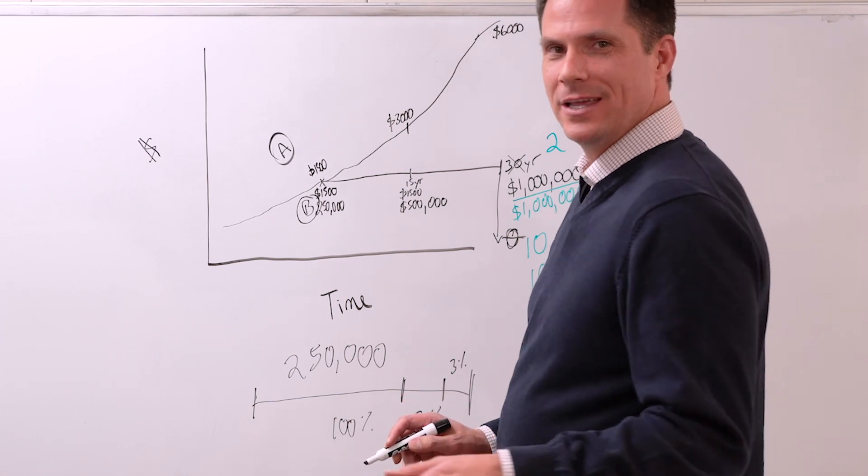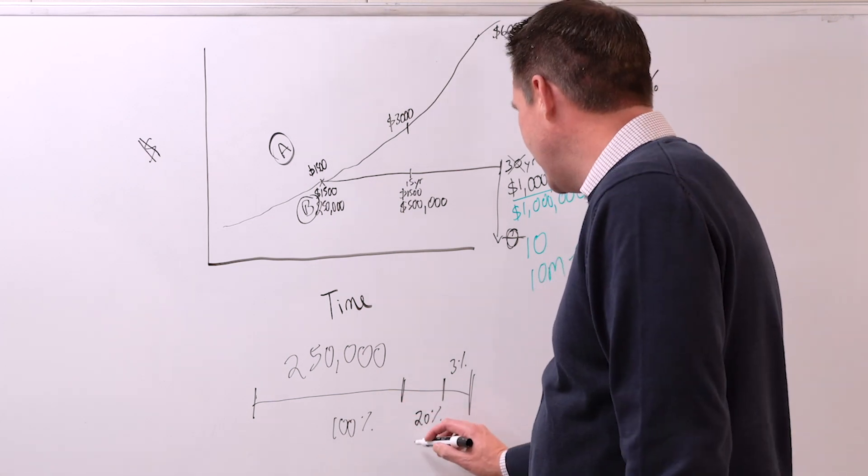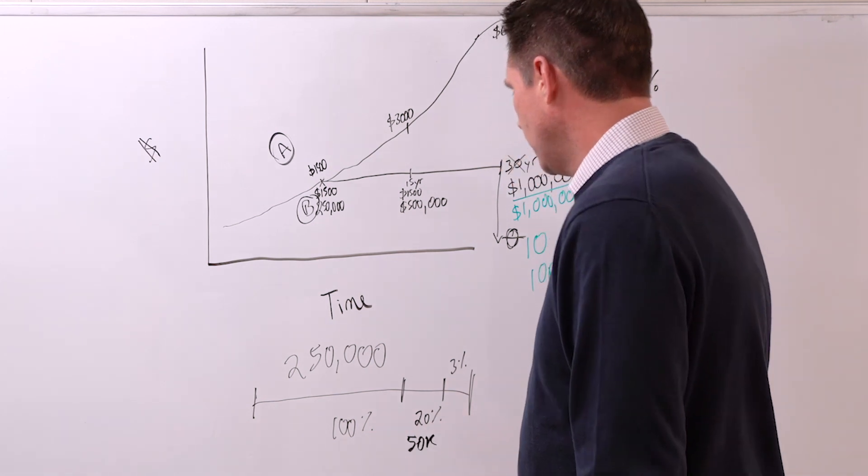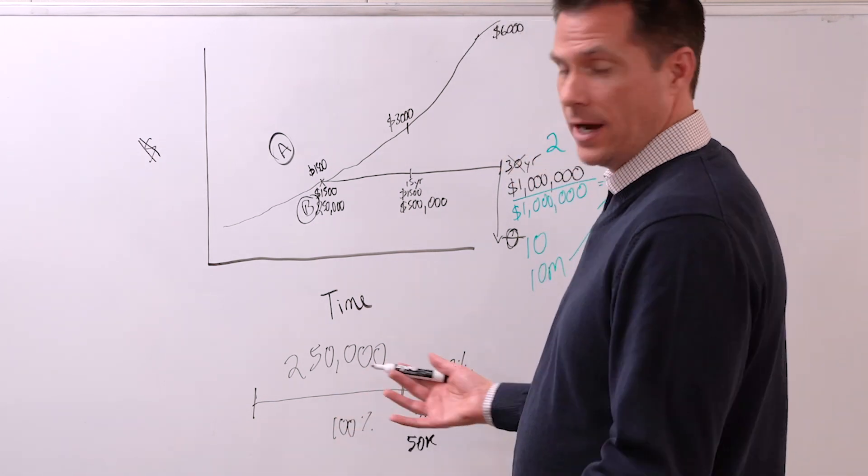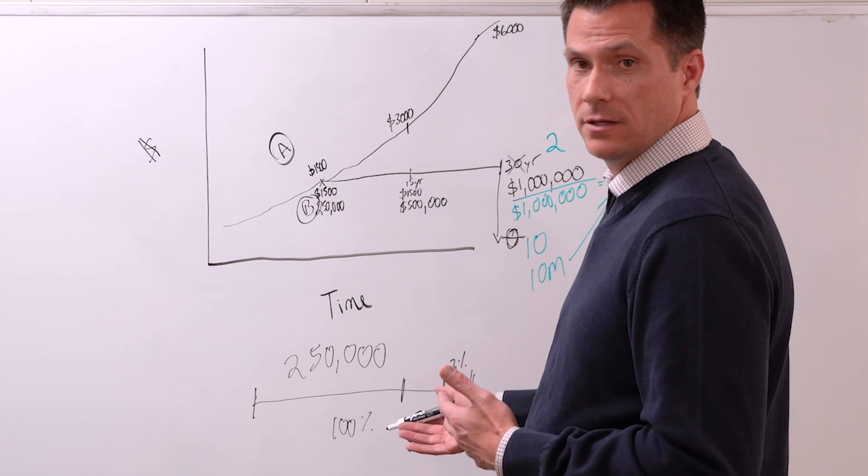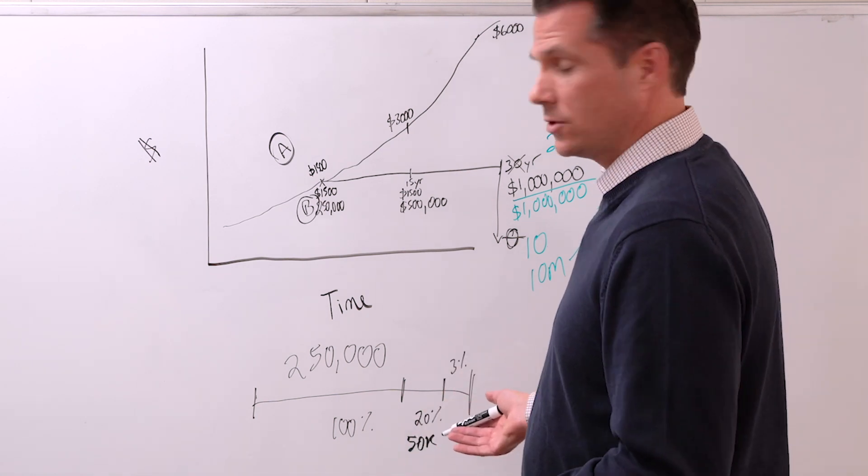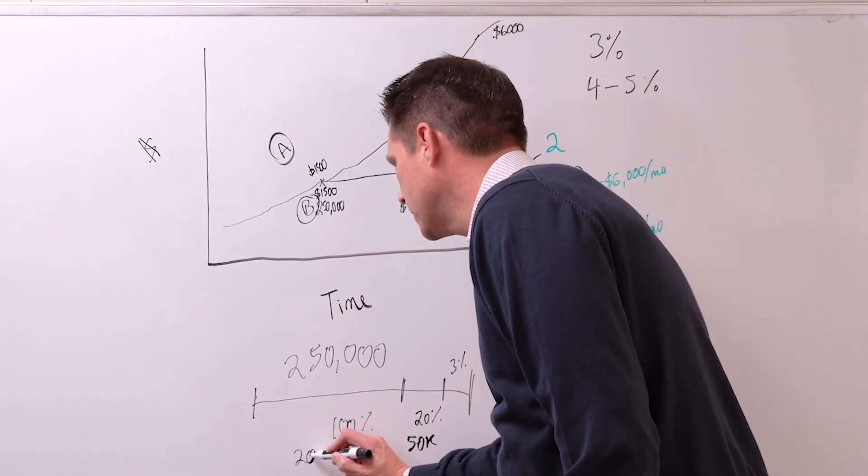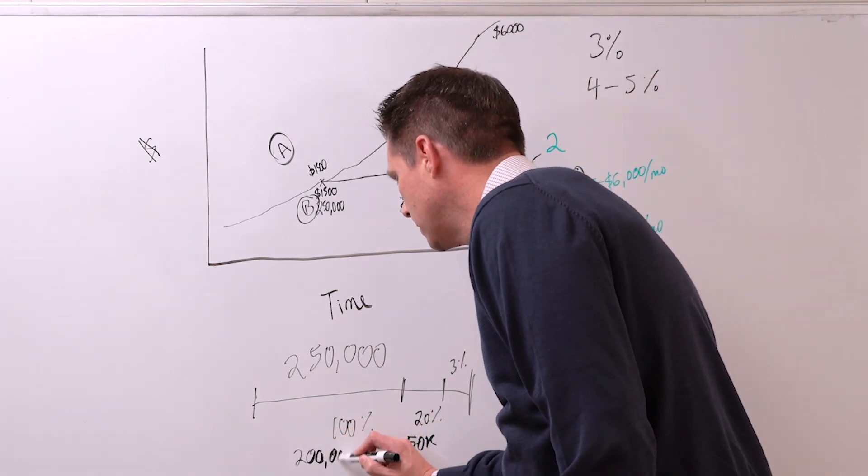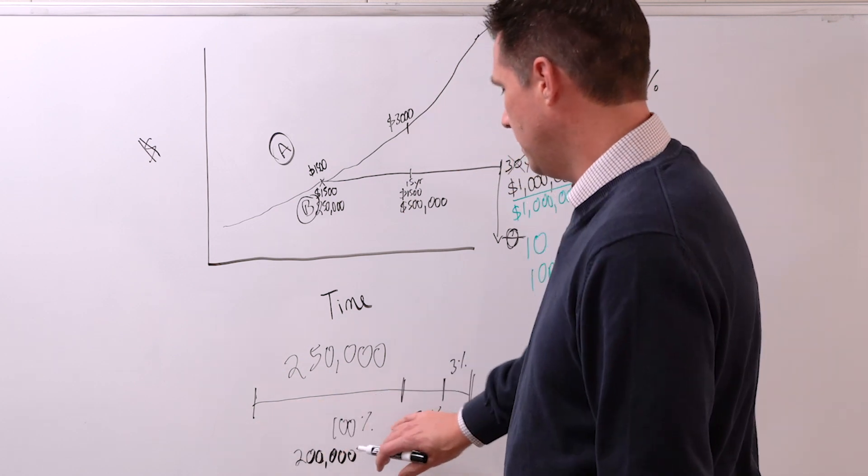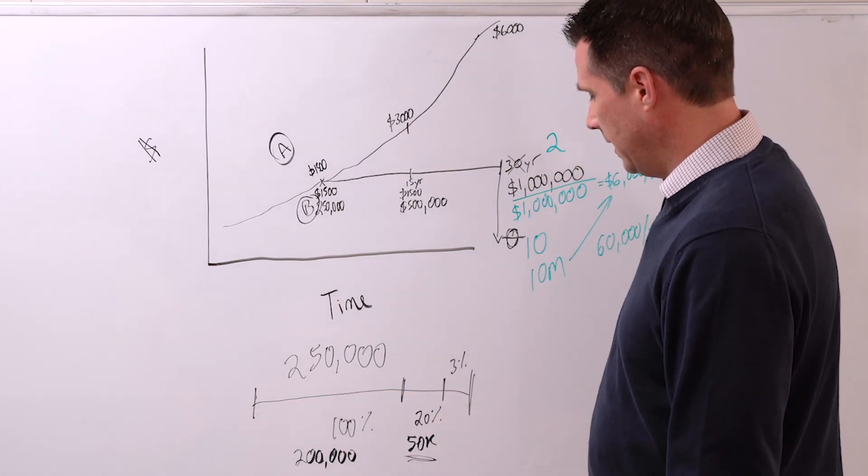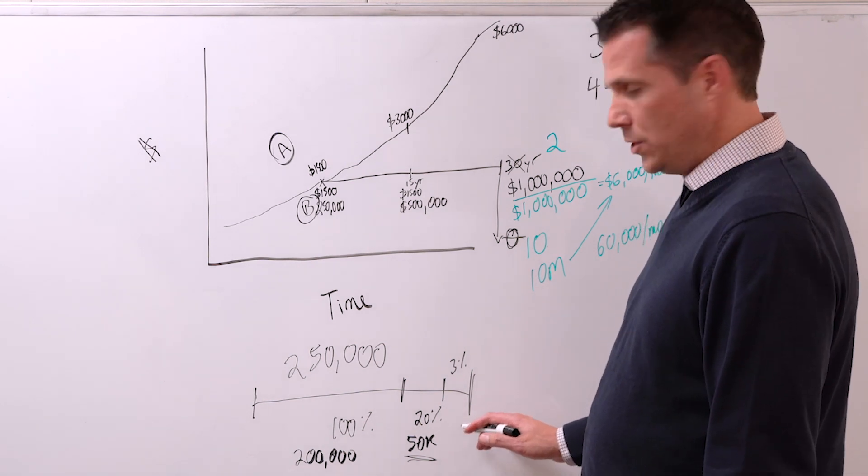When you buy a $250,000 house, you really only put at most, typically in residential, 20% down. So you've leveraged $200,000 of this price where you've only really put this in.